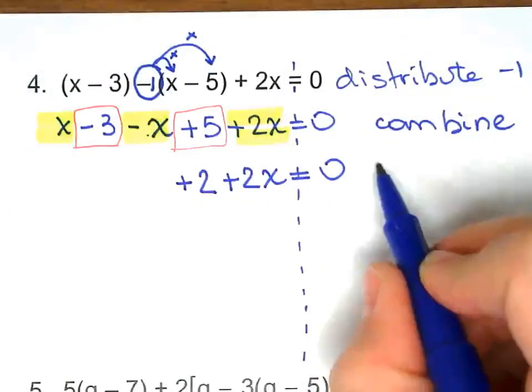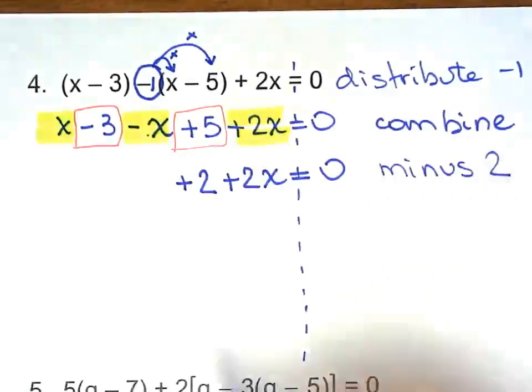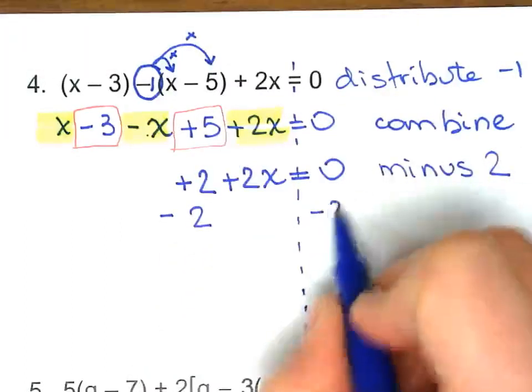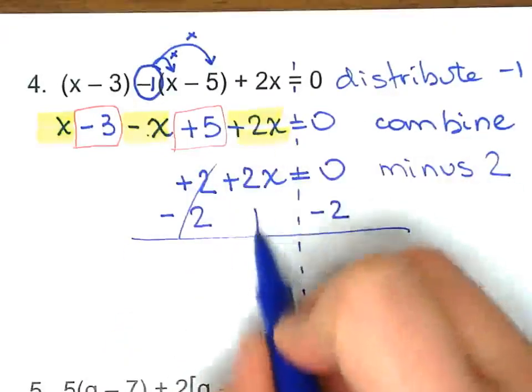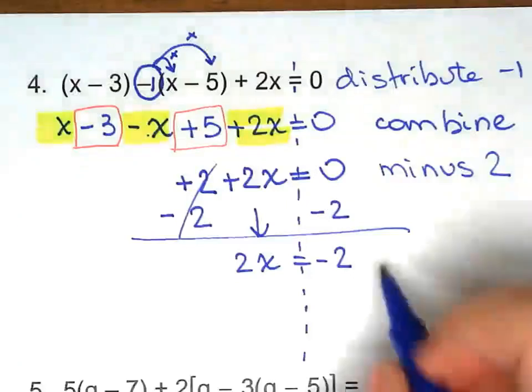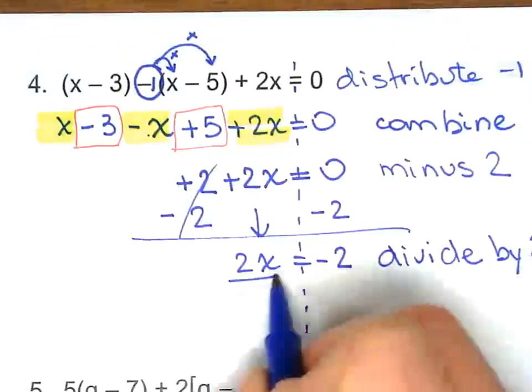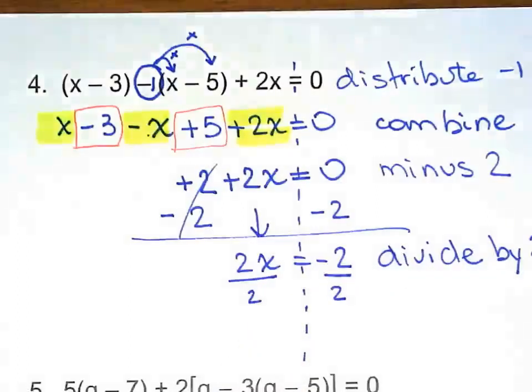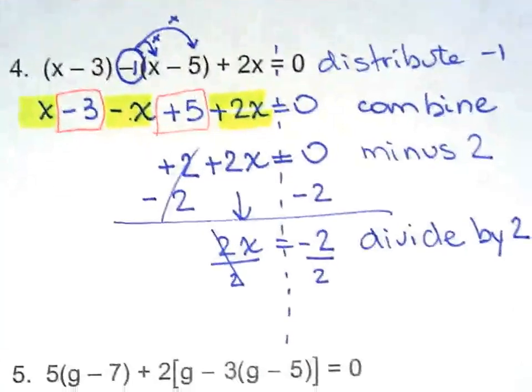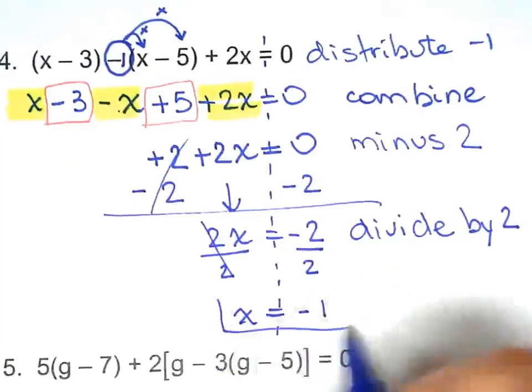Now we subtract, or we minus 2 from both sides. Bring 2x down. Now we divide by 2. That will give us negative 1.